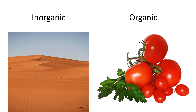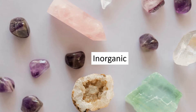The next item in the definition of mineral is inorganic. Inorganic means not organic. But what does organic mean? Organic means that it came from living organisms. In this picture, on the right are tomatoes and parsley — they are from living plants, so they are organic. Inorganic means material that has never been alive. On the left is the sand in a desert. Sand is not from living organisms, so sand is inorganic. Minerals are inorganic.